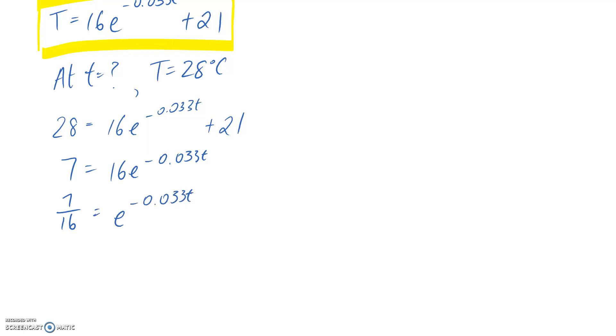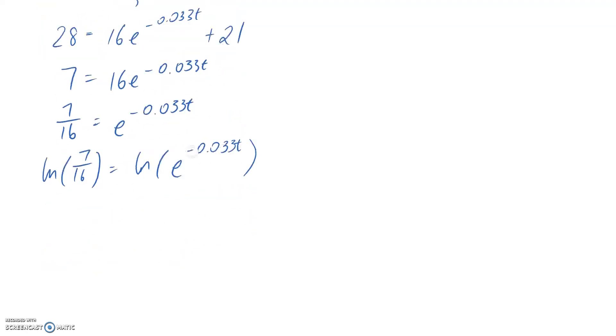Now, I want to get t on its own. So since it's tied up in the power, what I'm going to need to do is log both sides of my equation. And I know that when I log something that has got an e in it, all that happens is that the log and the e cancel out with each other, and I end up with just what's up in the power falling out. So I end up with this negative 0.033t.